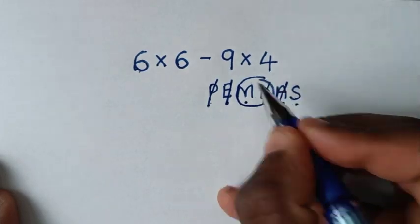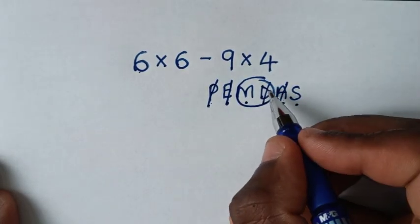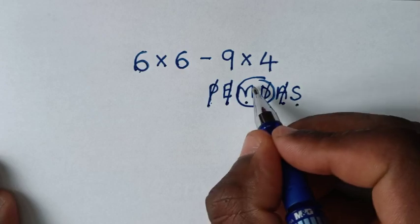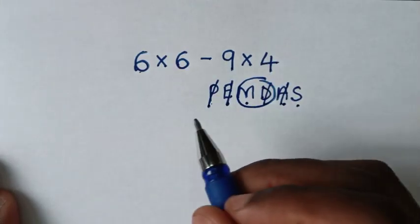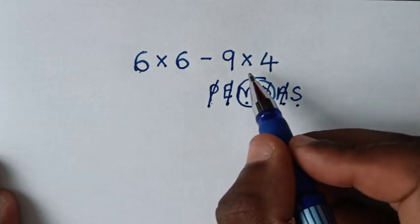In the problem we have two multiplications, so we'll work from left to right. We start to do this multiplication, then this multiplication.